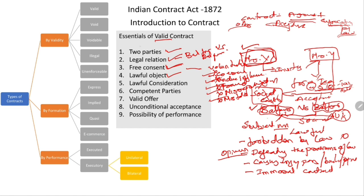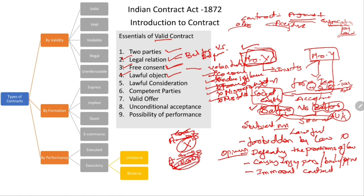We discussed four important points: two parties, legal relation, free consent, and lawful object. Now, lawful consideration: if A says to B, I will give my car without stating any amount and simply transfers it free, is this a contract? No. It is a contract only when A transfers to B for 2,50,000 and B pays that amount. So there should be a lawful consideration for any contract — then only it is called a valid contract.